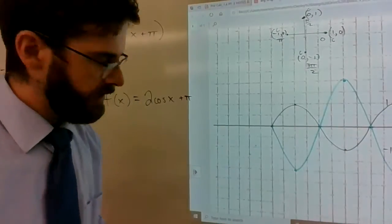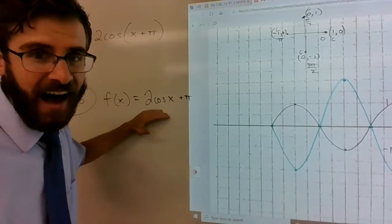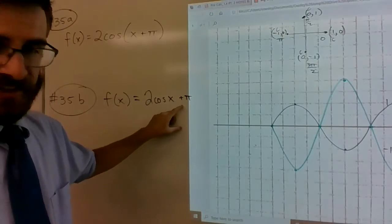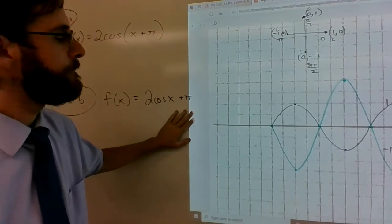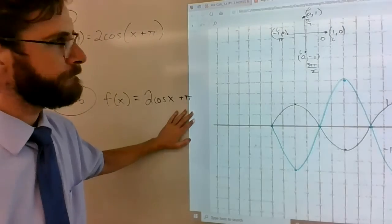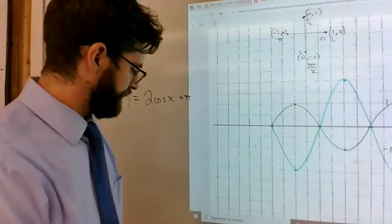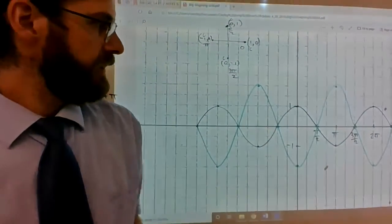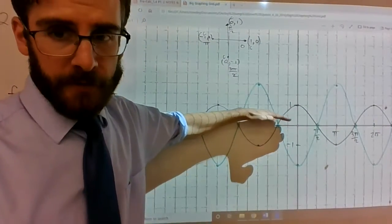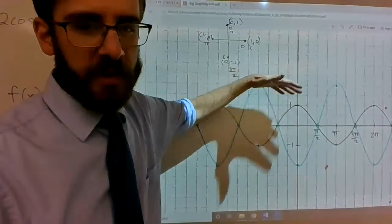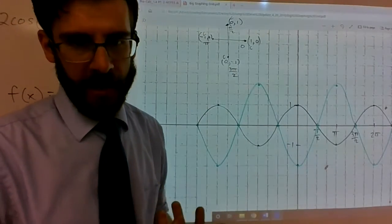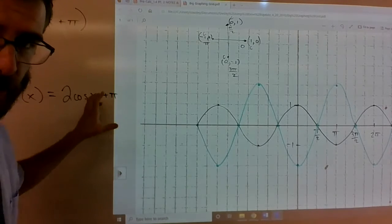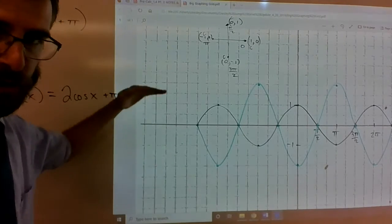Let's try one where it's not inside the grouping symbol. What if it's just 2cos(x) + π? Well, what that means is that our graph is shifted up. It's shifted up π instead of left π. Anytime you add something on the outside of the grouping symbols, it's usually a vertical shift.